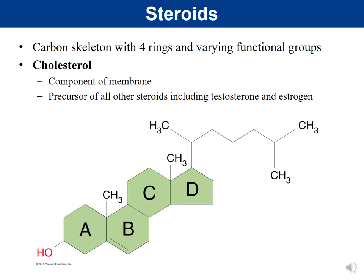The last type of lipid is the steroid — a carbon skeleton with four fused rings and varying functional groups. Cholesterol is an example of a steroid. It's found in animal cell membranes and helps maintain the correct fluidity or viscosity of the membrane. Cholesterol also serves as a precursor for all other steroids, including testosterone and estrogen — the body actually converts cholesterol into these hormones. Too much cholesterol, however, has negative outcomes.